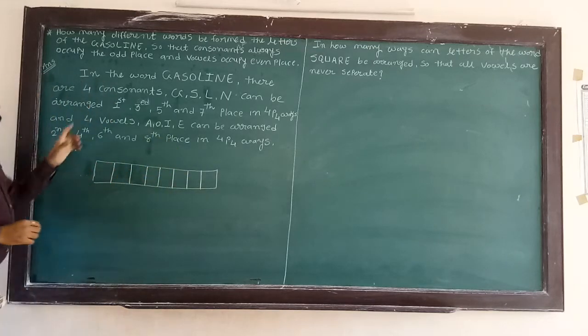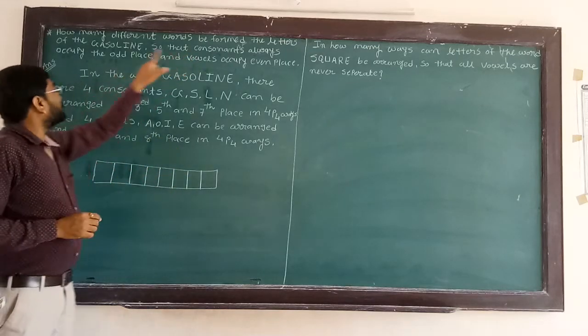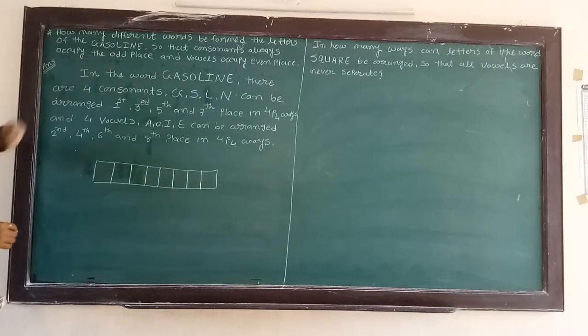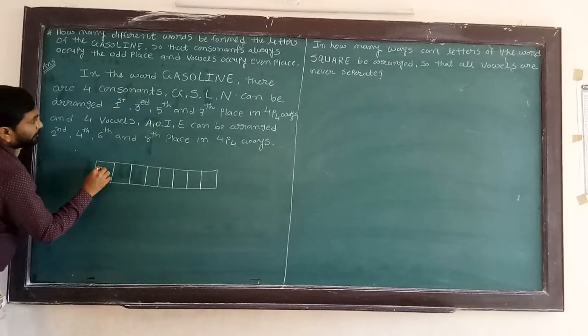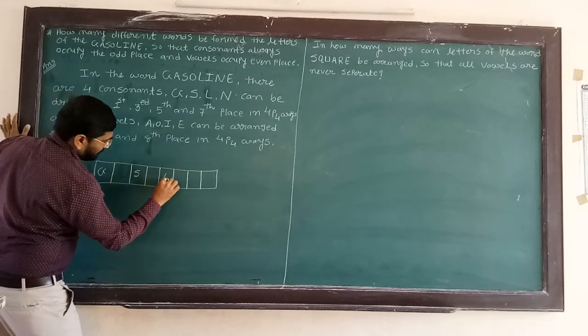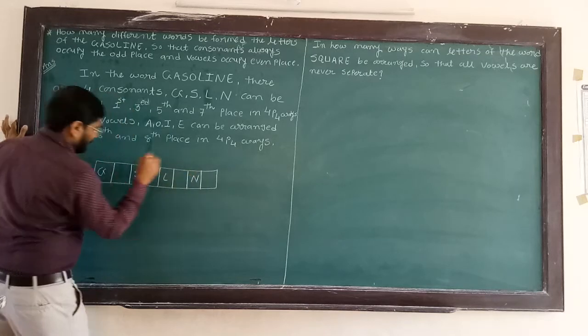Let me draw a diagram. Vowels always occupy odd places, so we write G, S, L, and N here.